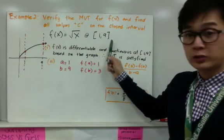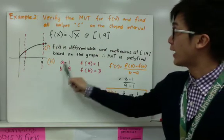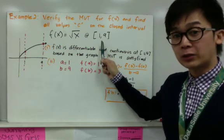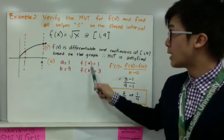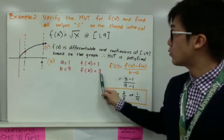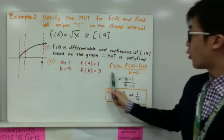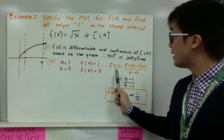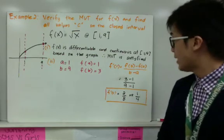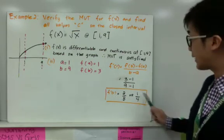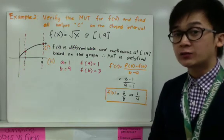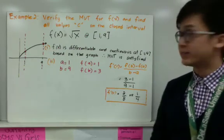Using the closed interval 1 and 9, we have a equals 1 and b equals 9. To find f of a and f of b for the formula: f of a equals 1 because the square root of 1 is 1, and f of b equals 3 because the square root of 9 is 3. From the mean value theorem formula, f prime of c equals f of b minus f of a all over b minus a, so f prime of c is equal to 1 over 4. We're almost finished — we just need to find point c using f prime of c.